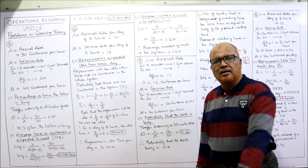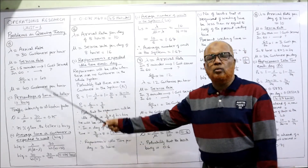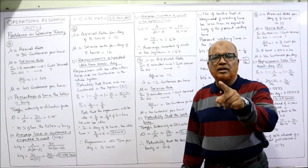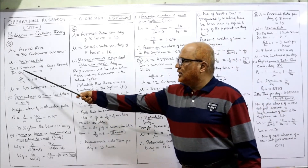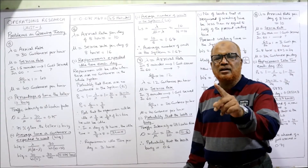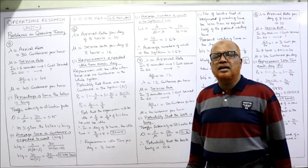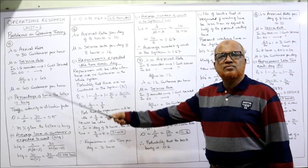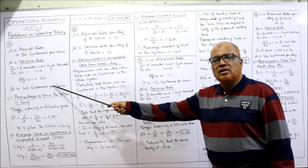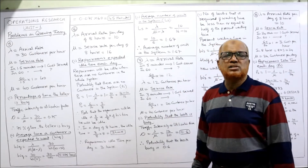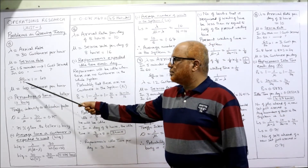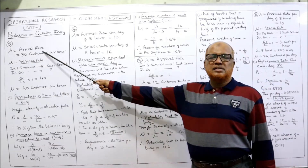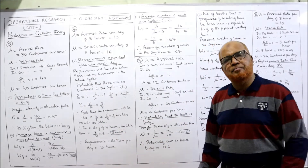In the problem, arrival rate lambda is directly given as 30 customers per hour. Service rate mu is not directly given — it is given that 1.5 minutes is taken to serve one customer. So in 1.5 minutes, one customer is served. There are 60 minutes in an hour, so mu = 60 divided by 1.5 = 40 customers per hour. So lambda is 30 customers per hour and mu is 40 customers per hour.